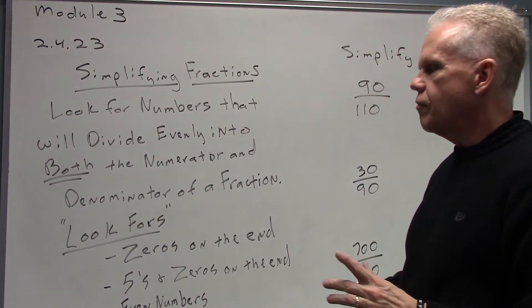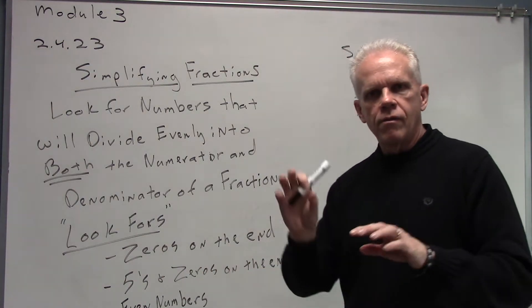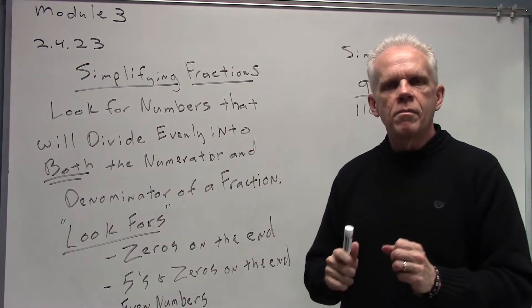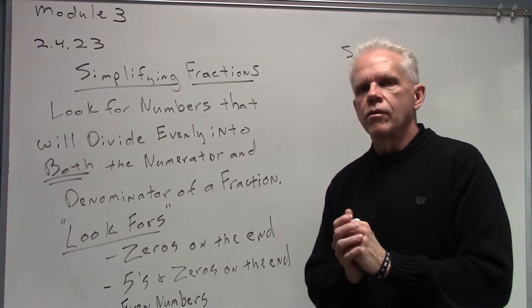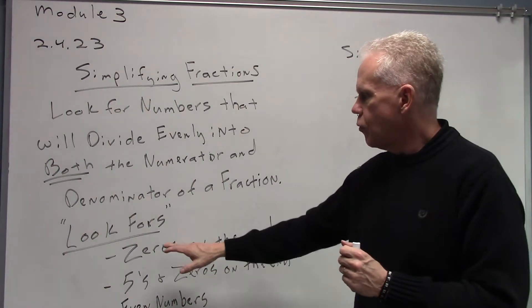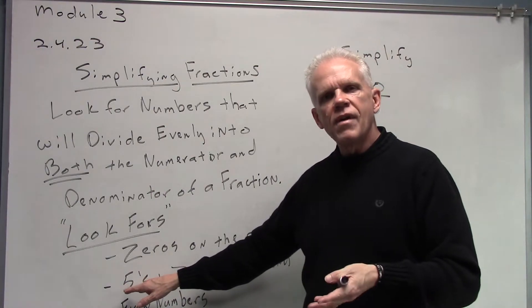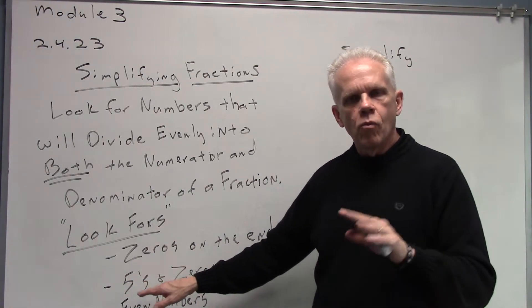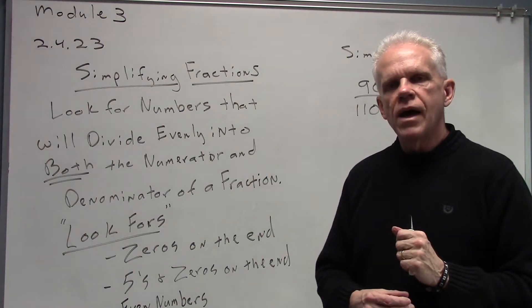There are some particular look-fors when we do this. If we see zeros on the end of the top and the bottom, we can automatically cancel those zeros. It's like dividing by 10 on the top and bottom, or 100 if there's two zeros. If the top and bottom end in five, or zero, or one ends in five and the other one ends in zero, we can divide the top and the bottom both by five.